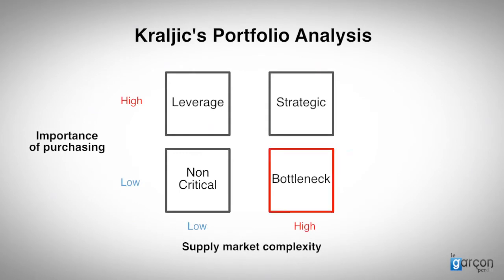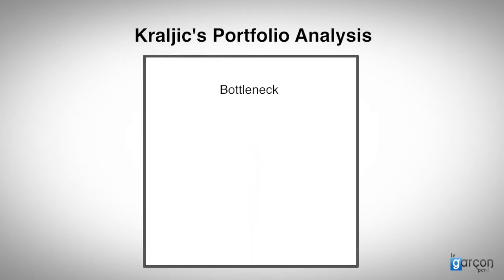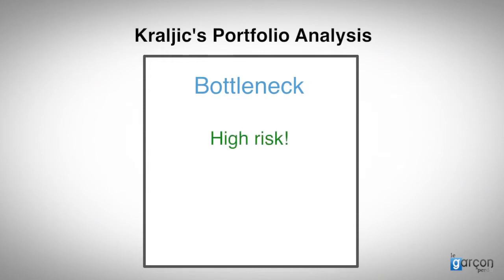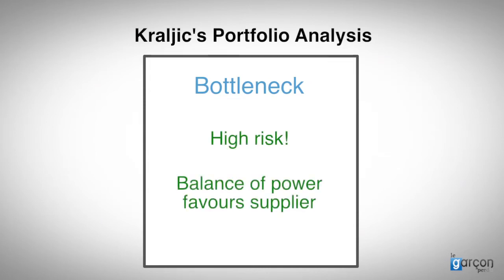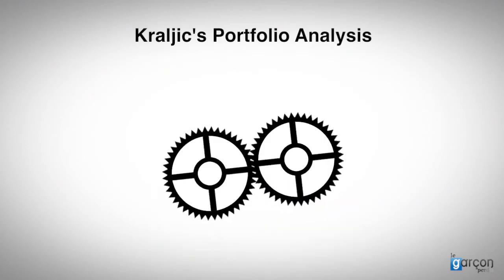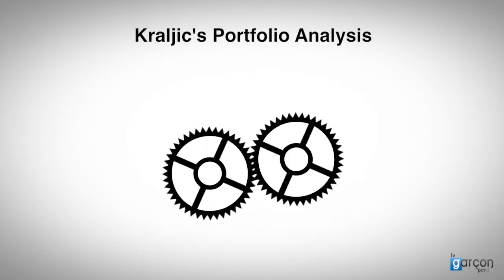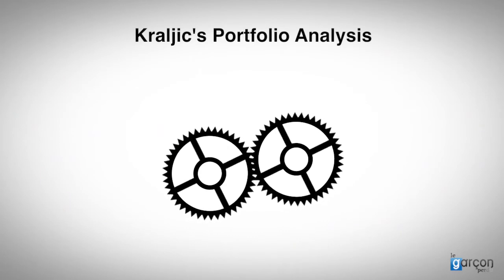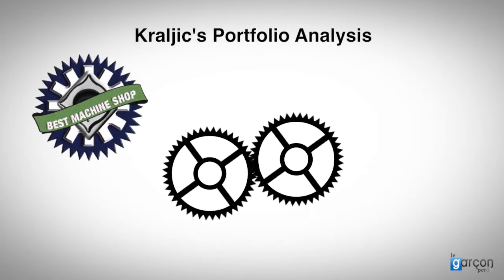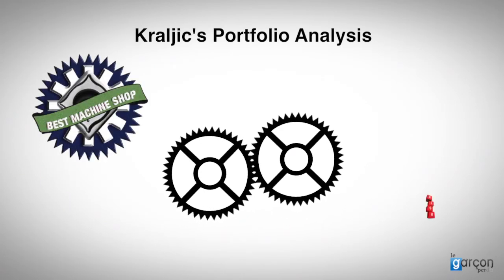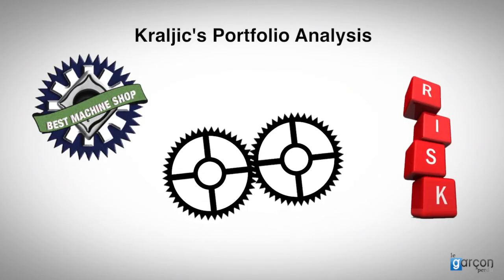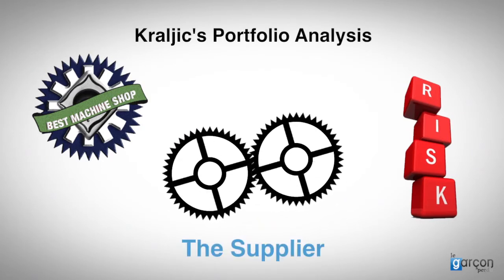Let's move on to talk about the bottleneck quadrant. The categories in this quadrant often represent a significant risk to the buying organisation, and it's common for the balance of power to favour the supplier. For example, we may buy spare parts for a key machine. How many sources do we have? One. What are the implications of non-performance? High. Who has the balance of power? The supplier.